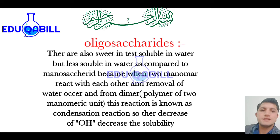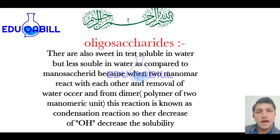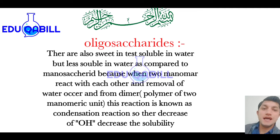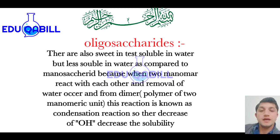The second most important class of carbohydrate is oligosaccharide. Oligosaccharides are hydrolyzed into one to ten monosaccharide units. They are soluble in water and sweet in taste, but an important point to remember is that compared to monosaccharides, they are less soluble in water.